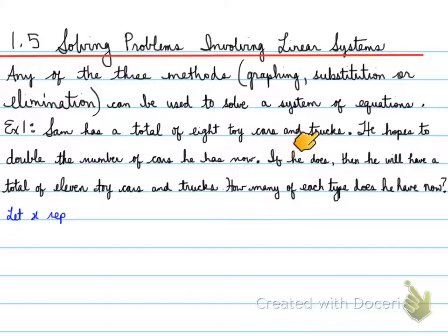We need to know how many cars does Sam have now and how many trucks he has now. We know he has a total of eight right now. So let X represent the number of cars and let Y represent the number of trucks. We know he has eight of these right now, so X plus Y is equal to eight.